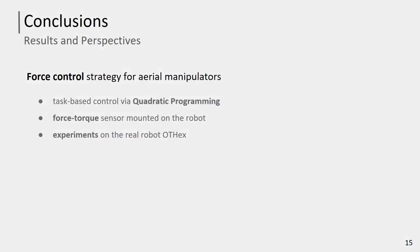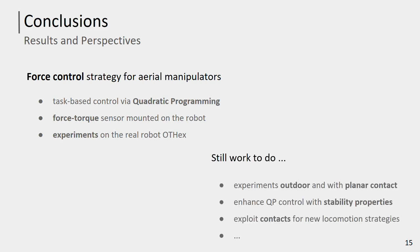To conclude, in this paper we implemented a force control strategy for aerial manipulators. The controller is a task-based control implemented via quadratic programming optimization. To improve the performance of robot force control, we included direct force feedback from an onboard force-torque sensor. Experiments on a real aerial manipulator validate the proposed controller. In the future, further experiments can be performed outdoors or by considering a different type of contact, for example a planar contact. Another interesting open point is to demonstrate the stability of the closed-loop system equilibrium when our task-based QP control is applied.